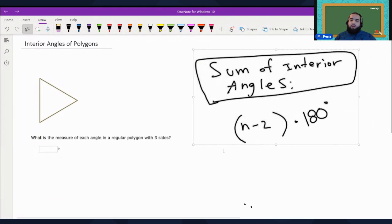We're going to use something called the sum of the interior angles, which is the number of sides minus 2 times 180 degrees.